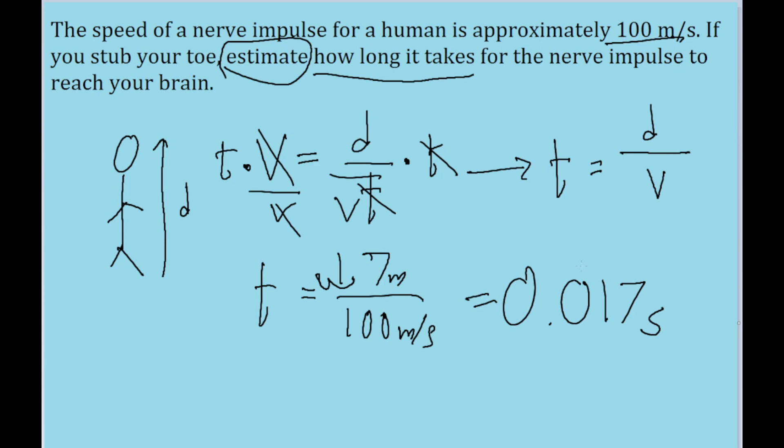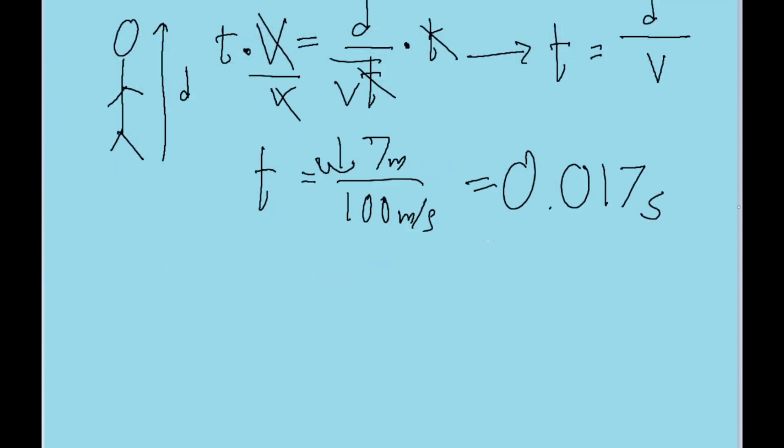And this is a valid answer, but based on the way the answer key I've seen for this problem, and just based on the way that estimation's usually done, it's usually considered good practice to round this to only one significant figure. So I'm going to round this from 0.017 to 0.02 seconds.